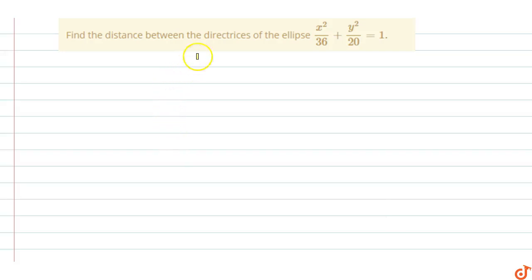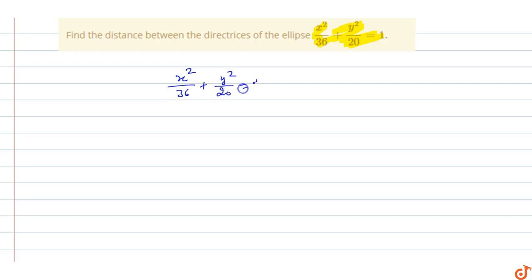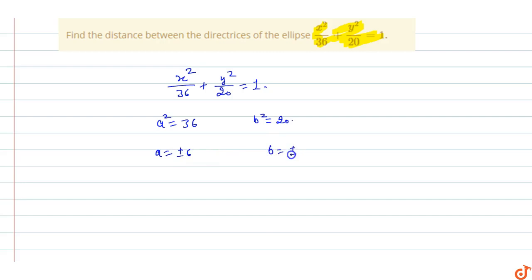In this question we have to find the distance between the directrices of the ellipse x² / 36 + y² / 20 = 1. From this equation of the ellipse, a² = 36 and b² = 20, so the value of a equals ±6 and b equals ±2√5.